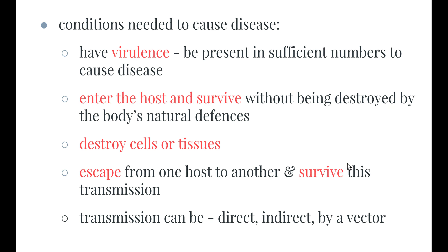There are a number of conditions needed for a pathogen to cause disease. Firstly, it needs virulence — basically, there need to be large numbers of the pathogen present. A single pathogenic bacterium is not going to cause disease, but if it enters your body and is able to survive without being destroyed, it will multiply until the numbers overtake a particular part of the body, and that's what leads to disease.